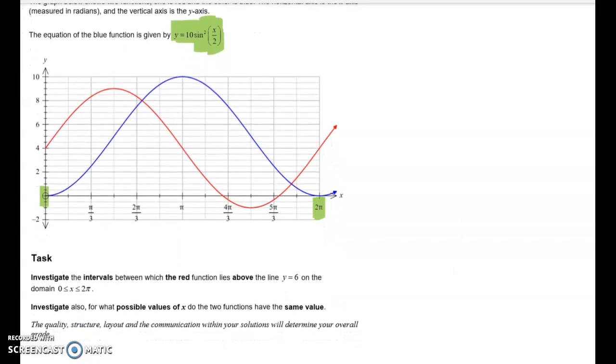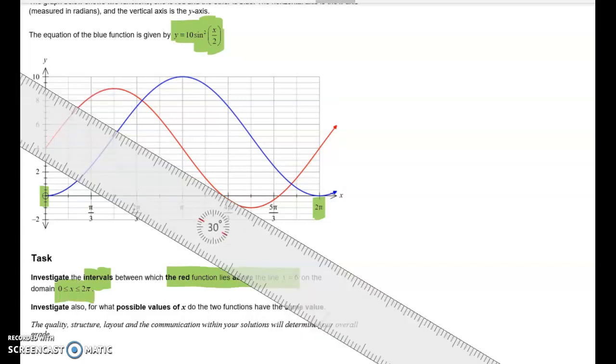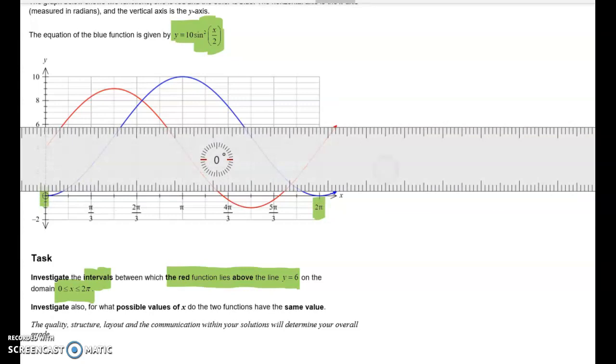We're not told directly that we have to find that, but we can't do much else until we can. So the first part of this task is to investigate the intervals between which the red function lies above the line y equals 6 on the domain x is between zero and two pi. So let's just grab a ruler and draw in that line of y equals 6 so that we can see what we're after.